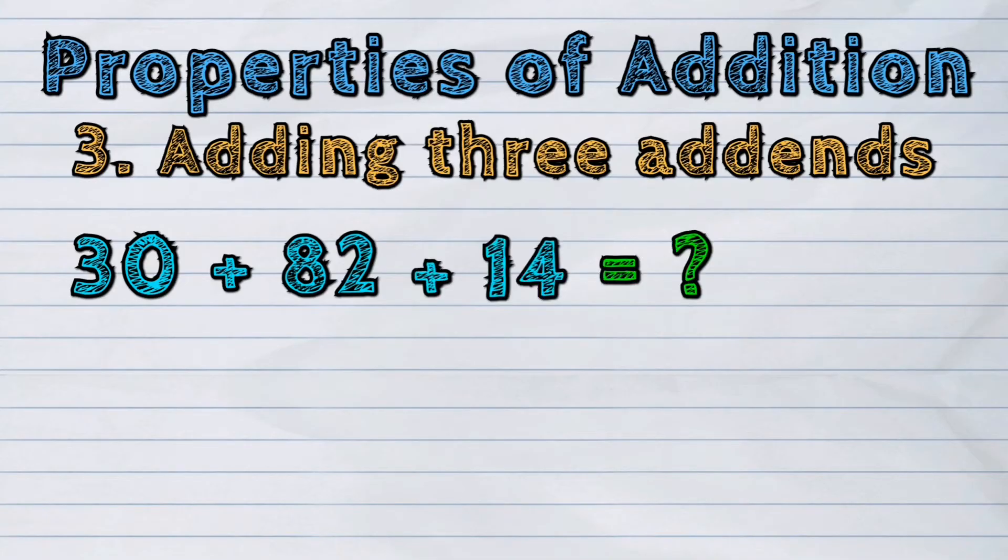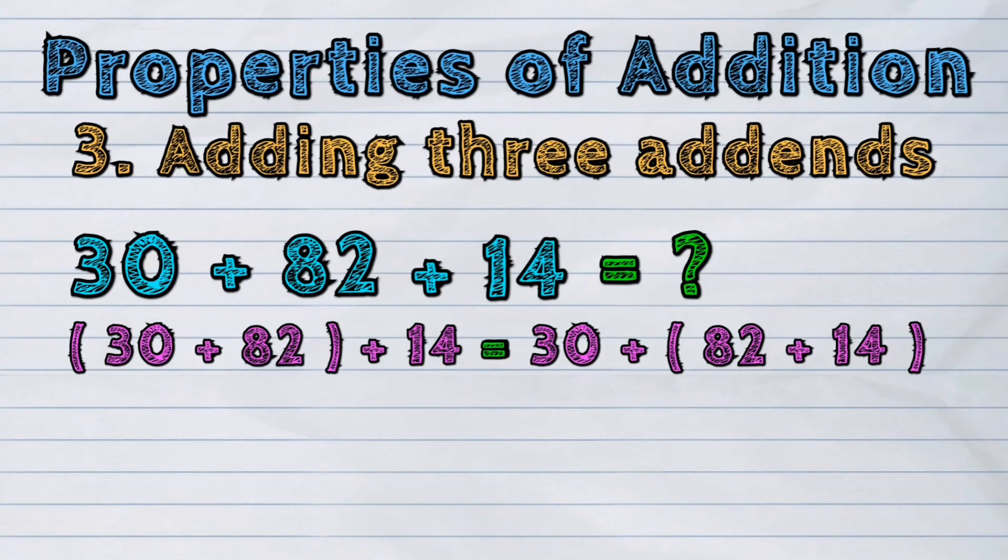We can add in this way. When adding more than two numbers, two addends can be added at a time. The parentheses show which addends should be added first and the sum will not be affected.